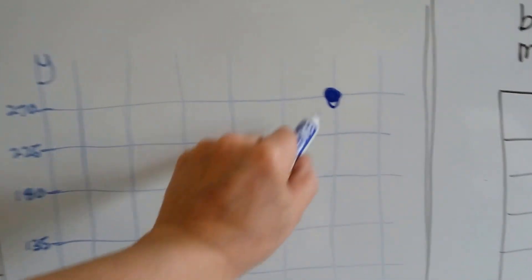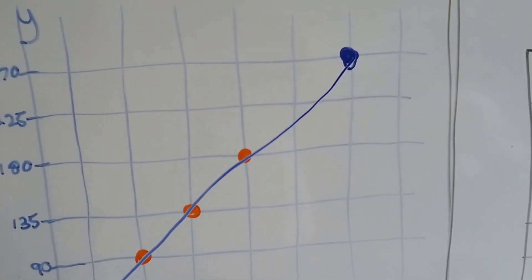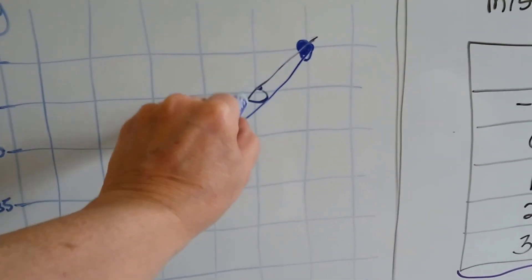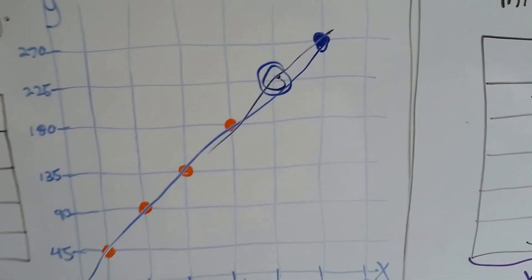And if we drew a line with a ruler right through it, we'd be able to see that it would have been right here, that that would have been the missing one. Very easy.